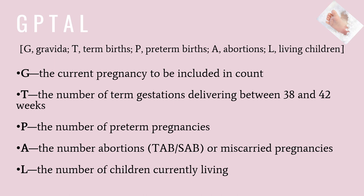Regarding GTPAL: G is for gravida — how many pregnancies. T is for how many term births there were. P is for how many preterm births there were. A is how many abortions, including miscarriages, spontaneous abortions, as well as therapeutic abortions. And L stands for living children.